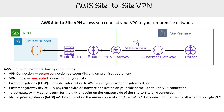We have the virtual private gateway, VGW. This is the VPN endpoint on the Amazon side of your site-to-site VPN connection that can be attached to a single VPC.